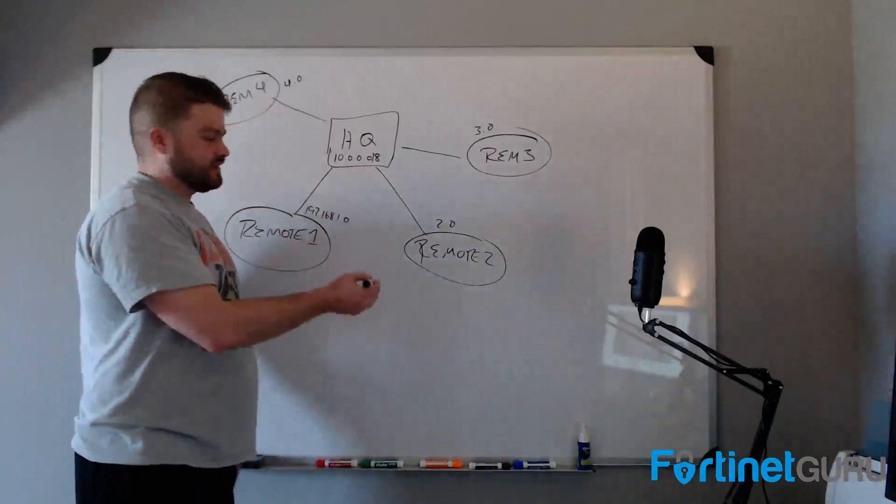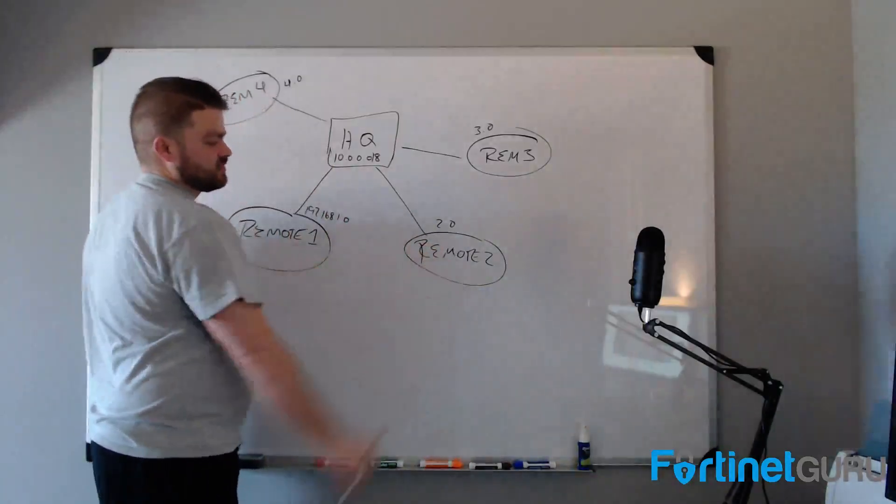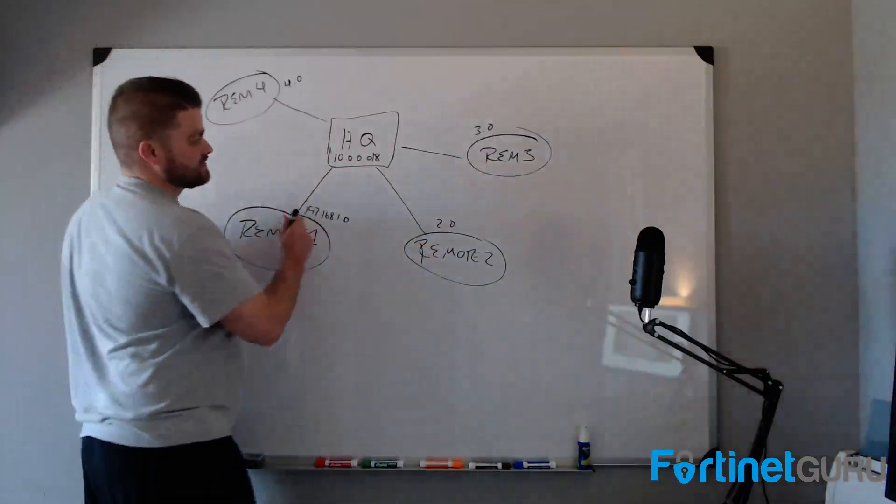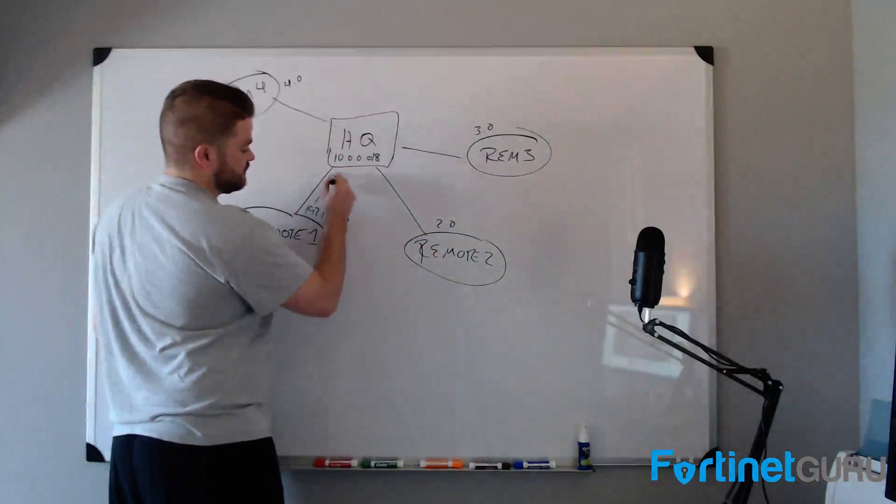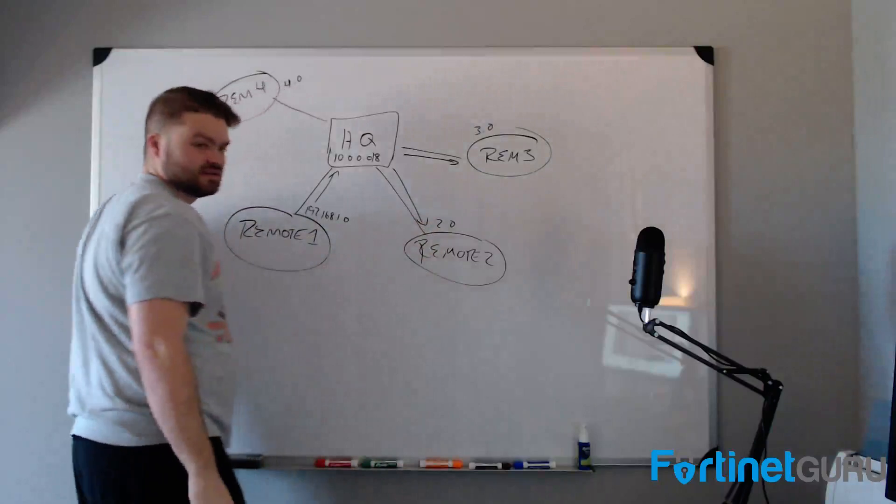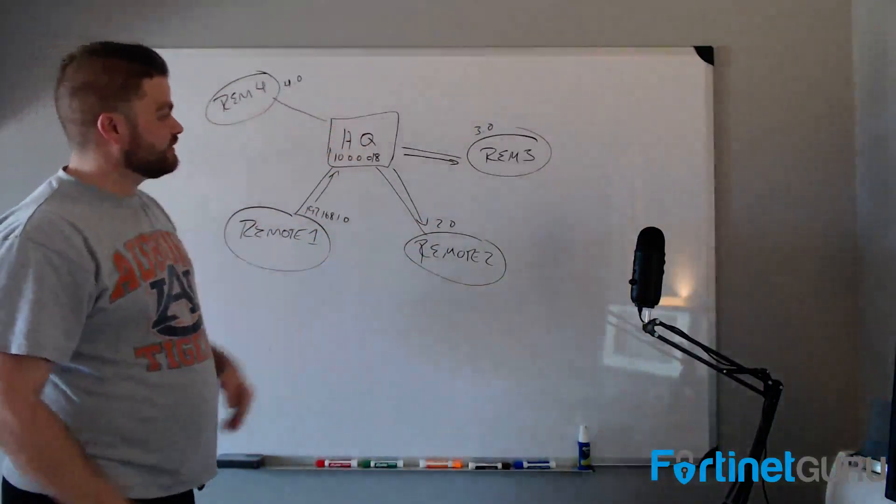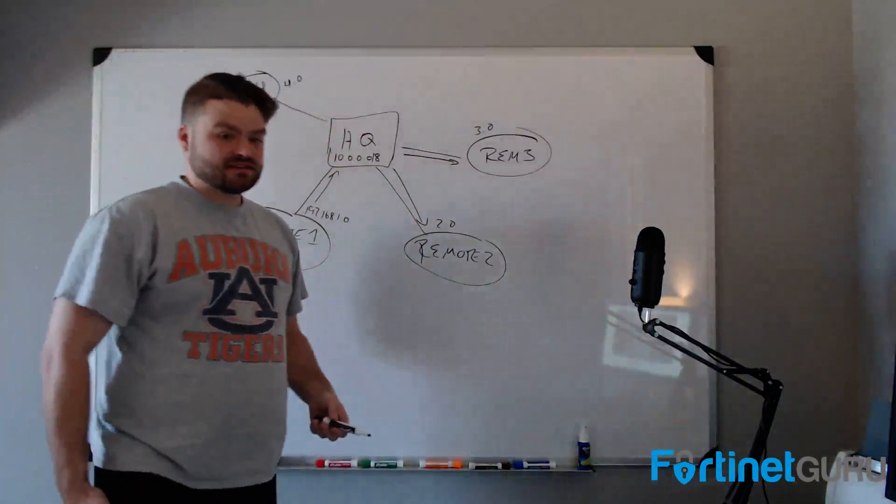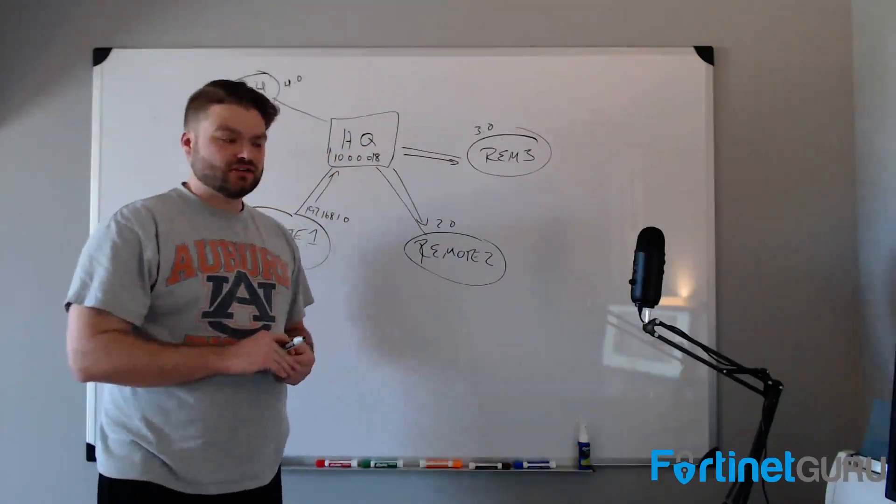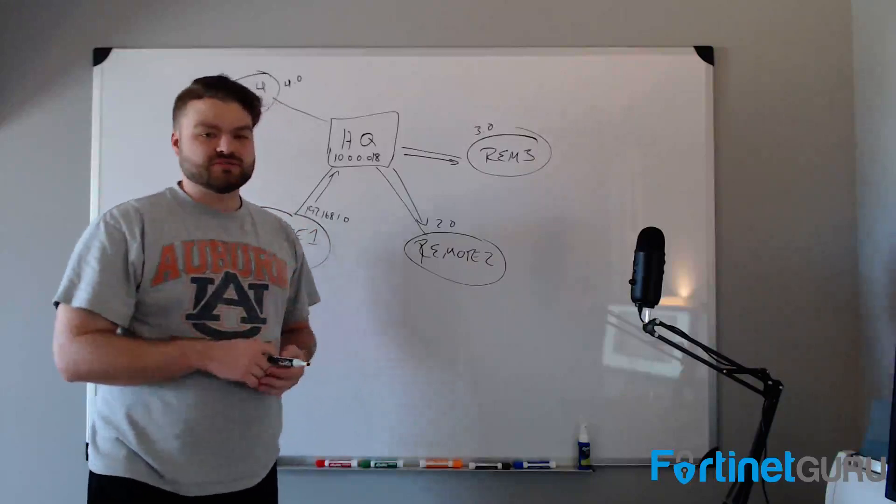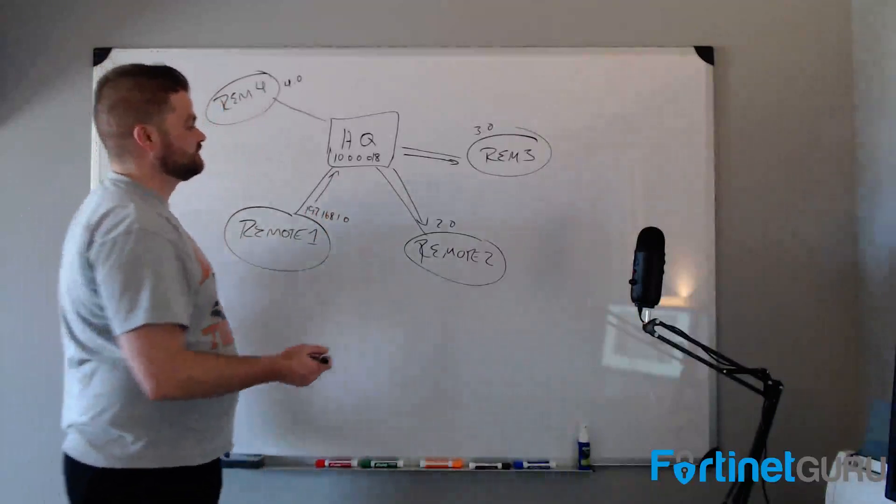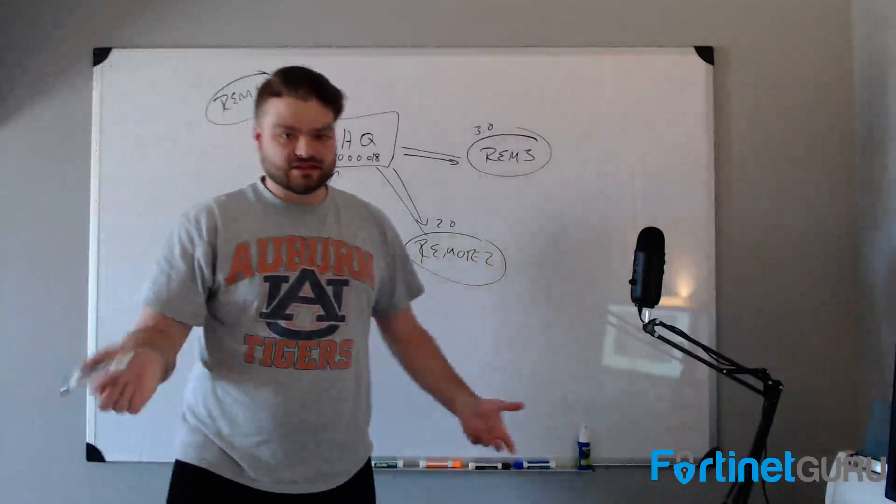So to access any of their resources, it goes up that tunnel. In order to access resources that live at branch two or branch three from branch one, it has to go up to HQ and then down to those sites. Now, if you have a ton of bandwidth right here at HQ, that's not a big deal. But in the event that you did, that could be an issue.